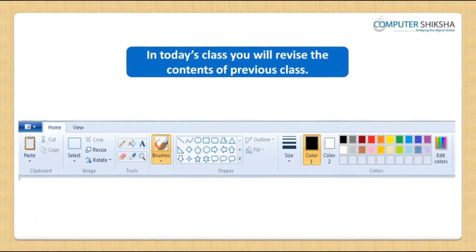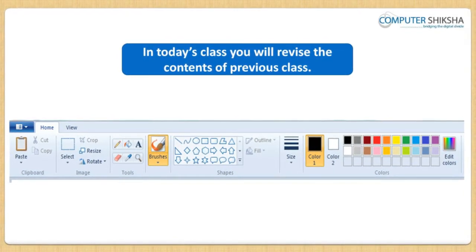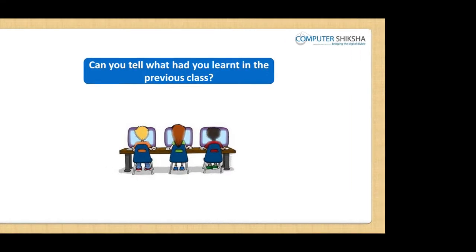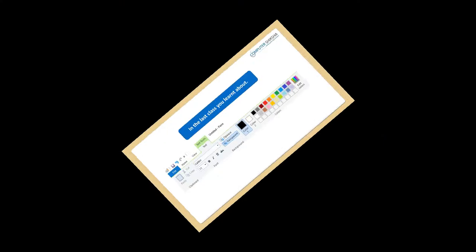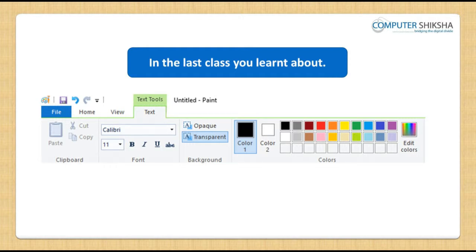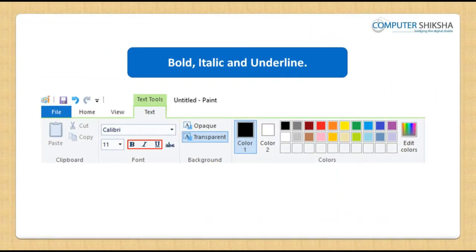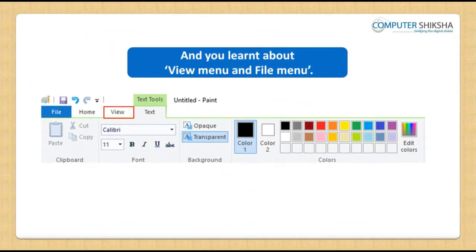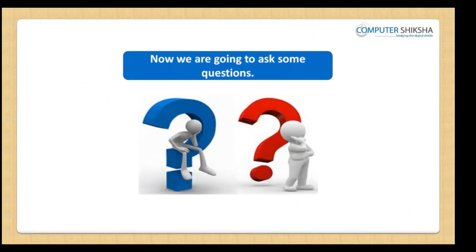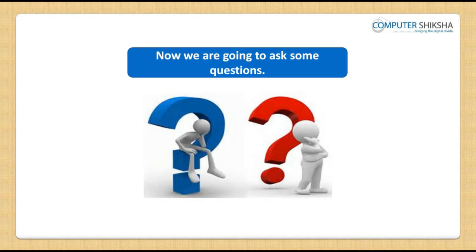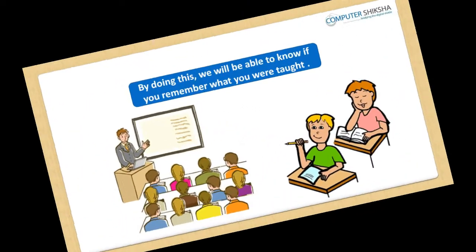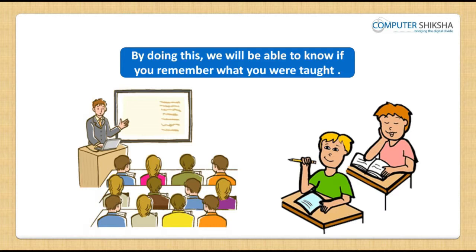In today's class, you will all revise what you learned in the previous class. In the last class, you had all learned about the font family, font size, bold, italic, underline, and also some options of the view and file menu. Now, all of you will be asked some questions about the last class and you will be required to answer them. By doing this, we will be able to know if you remember what you were taught.